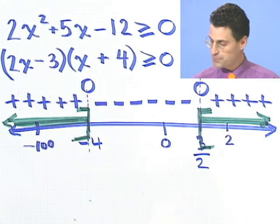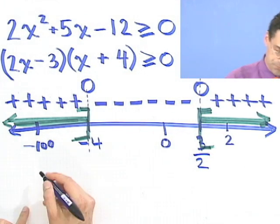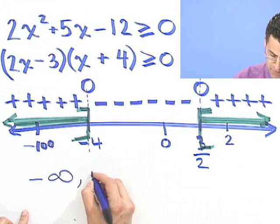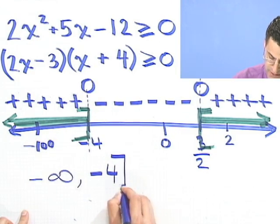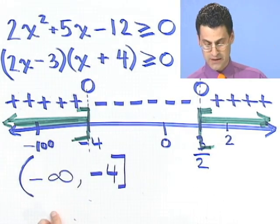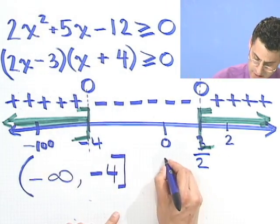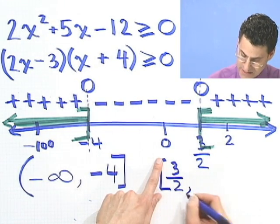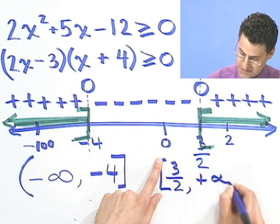If you wanted to write it out in interval notation, how would that look? I just would copy this down. Minus infinity out to minus 4, including the minus 4, but never including the negative infinity. And then I pick up the action at 3 halves with a bracket, because I'm including that, out to plus infinity.